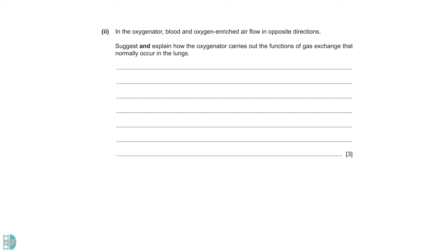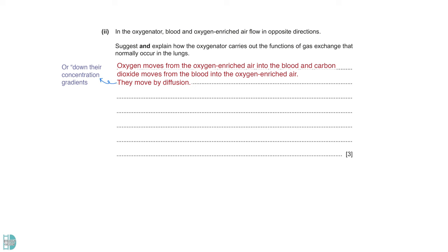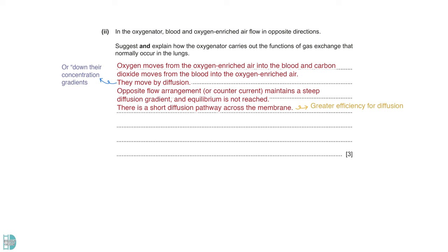In the oxygenator, blood and oxygen-enriched air flow in opposite directions. Suggest and explain how the oxygenator carries out the functions of gas exchange that normally occur in the lungs. Oxygen moves from the oxygen-enriched air into the blood. And carbon dioxide moves from the blood into the oxygen-enriched air. They move by diffusion, down their concentration gradients. The opposite flow arrangement is also known as the counter-current arrangement. This maintains a steep diffusion gradient and equilibrium is not reached. There is also a short diffusion pathway across the membrane, allowing a great efficiency for diffusion. There is a mark for AVP. For example, the oxygenator membrane will have a large surface area for a high diffusion rate.